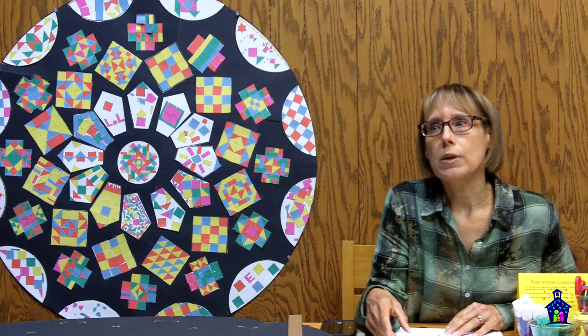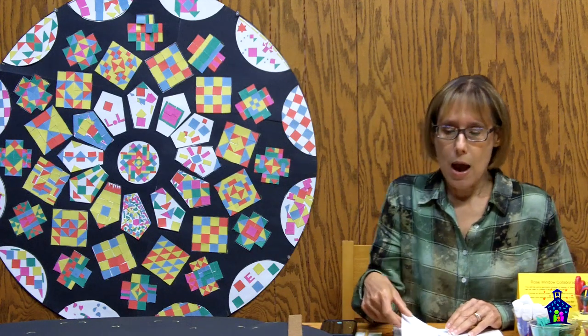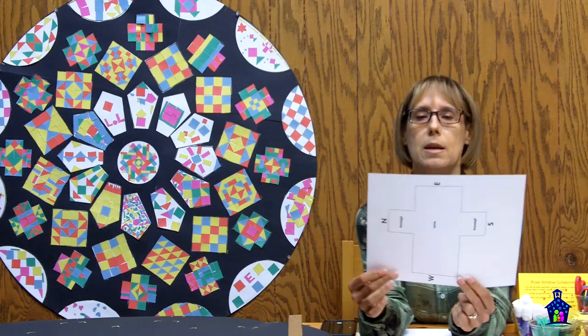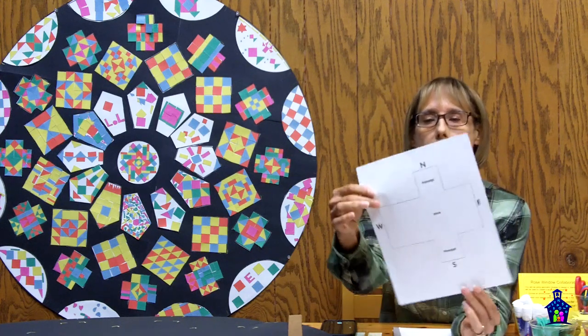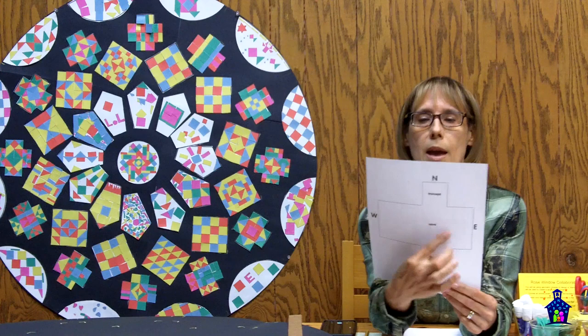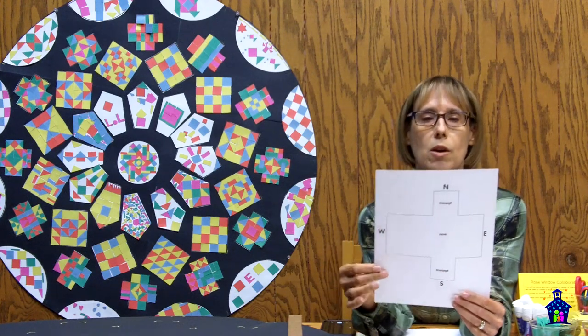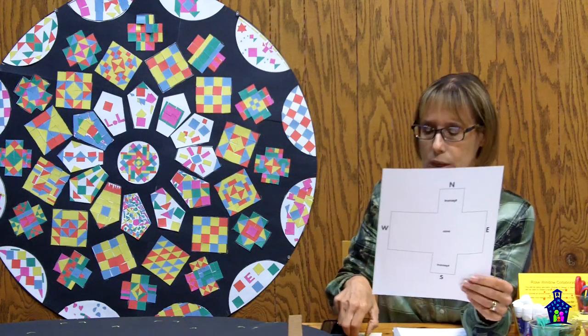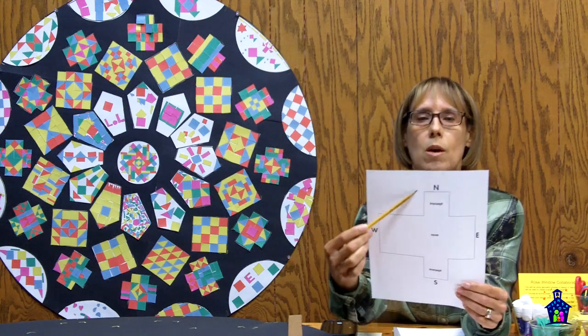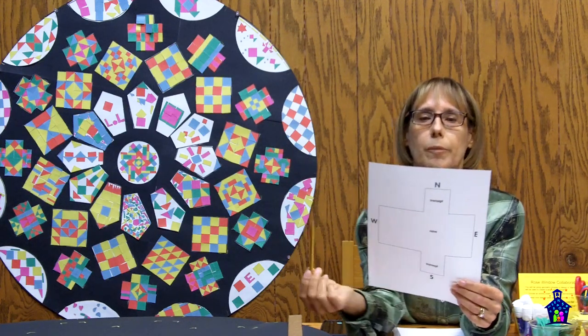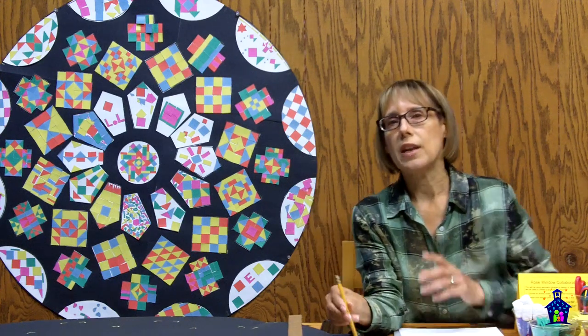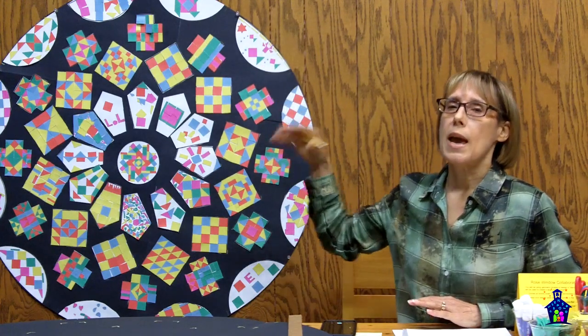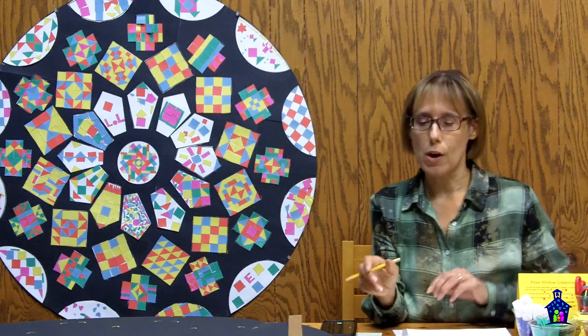Rose windows are found mostly in French cathedrals that were built during the medieval period. Cathedrals were built in the shape of a cross, and this big section here is called the nave, and the arms of the cross are called the transepts, and then the altar was built over here on the east side. So the North Transept Rose Window at the Cathedral would be found right there. They believe that the name Rose Window came from the radiating spokes of rose windows and the resemblance to the rotating petals of a rose.